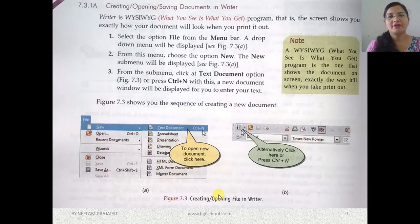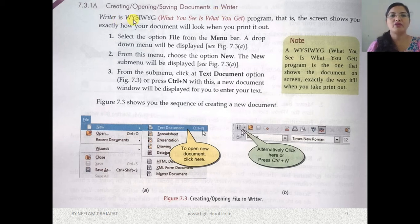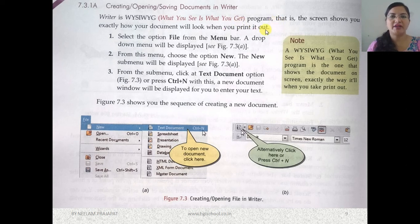Good morning children. Today we will continue chapter 7 and study how we can create and open a document in Writer. Writer is a 'What You See Is What You Get' editor — in short, WYSIWYG. That means the way you are able to see it on screen, the same way you will get the printout. The screen shows exactly how your document will look when you print it out.